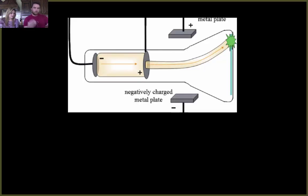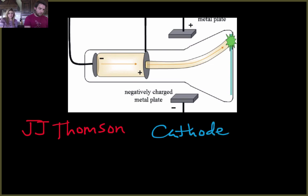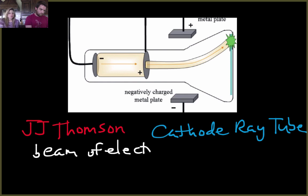Next one we have here is a picture of an experiment conducted by J.J. Thompson. This experiment was called the cathode ray tube. What exactly went on here? He was able to shoot a beam of electrons through the cathode ray tube.